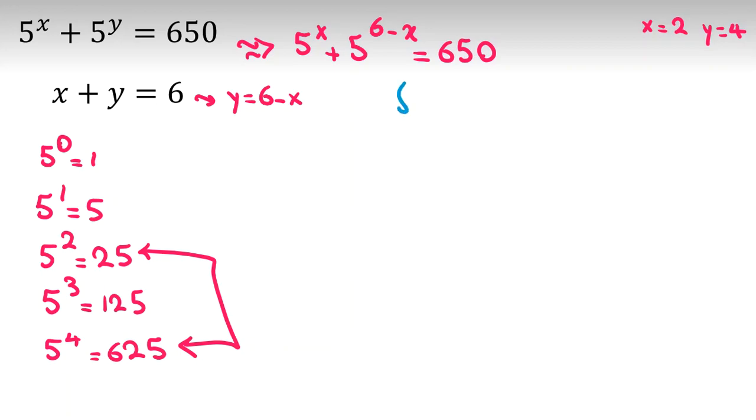In the next step, I consider 5^x as a. So 5^(6-x), we can say it is 5^6 over 5^x, which is 5^6 over a.